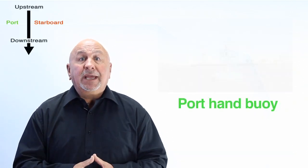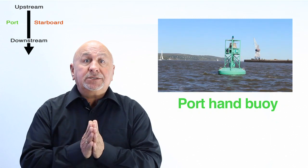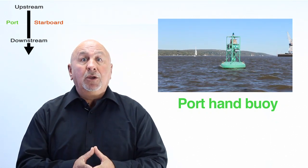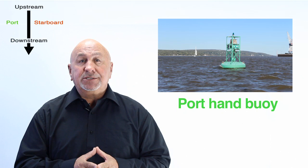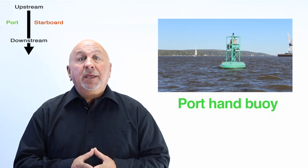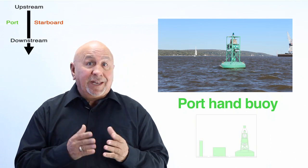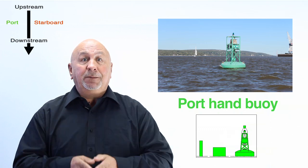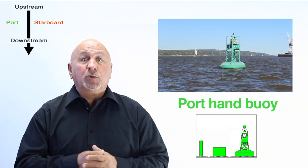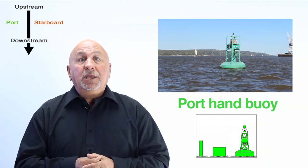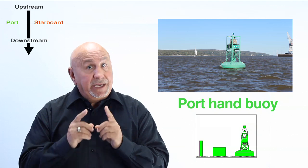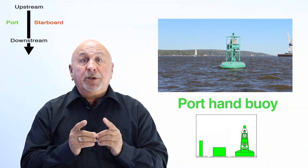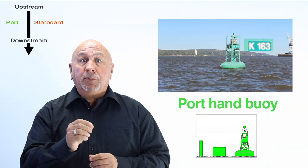Port hand buoys. A port hand buoy marks the left side, or port side, of the channel, or where danger is present. It must be kept on the port or left side of the pleasure craft when heading upstream. It is painted green. If the buoy has a light, the light is green, the top is flat, and if numbered, it bears an odd number.